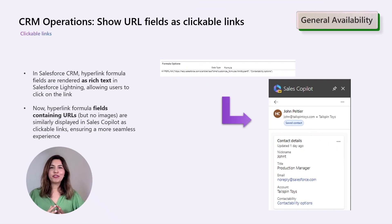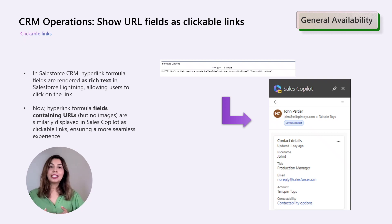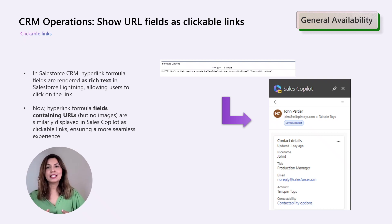Next, an improvement for our Salesforce customers using Sales Copilot today. In Salesforce CRM, hyperlink formula fields appear as rich text within the Salesforce Lightning experience, enabling users to easily access linked content. Now, in Sales Copilot in Outlook, hyperlink formula fields containing URLs — excluding images — are also presented as clickable links, enhancing the user experience for a smoother workflow.